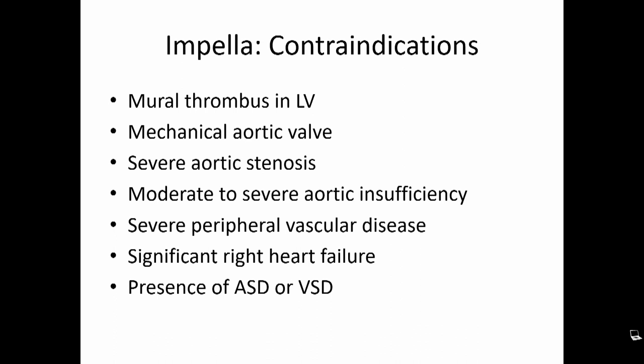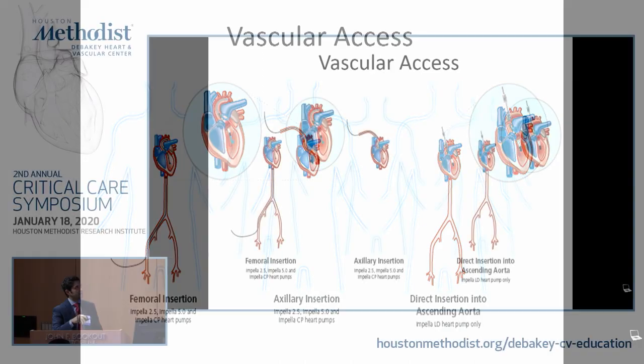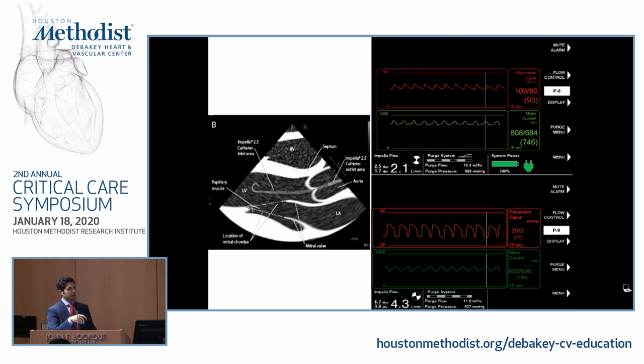The access route can vary. The most common is femoral insertion, mostly for Impella 2.5 and CP. It can also be placed axillary, mostly for Impella 5.0, which is important for patients who will be on it longer — such as those waiting for a heart transplant — to maintain mobility. The LD is surgically placed into the ascending aorta. On echocardiography, the Impella crosses the aortic valve, with the inlet sitting in the left ventricle and the outlet in the ascending aorta.